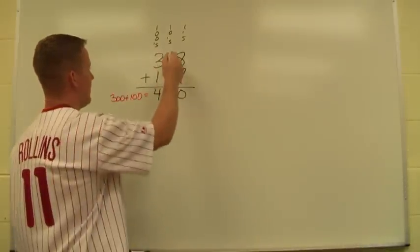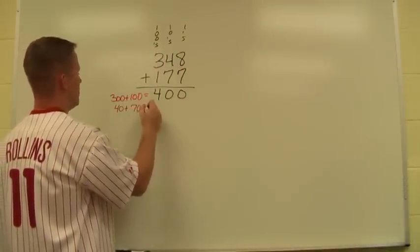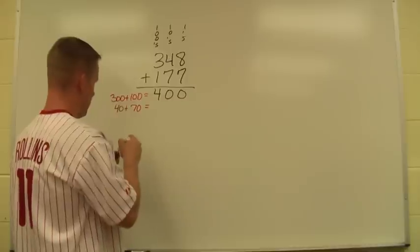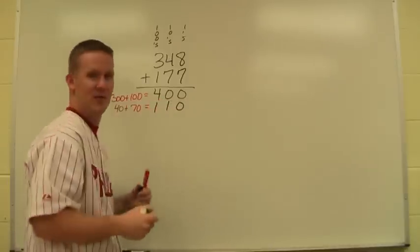I go to my tens place, I have 40 plus 70, which gives us 110, which isn't going to fit into the tens column. So we must move it over one and start it again. We have to make sure we line everything up.